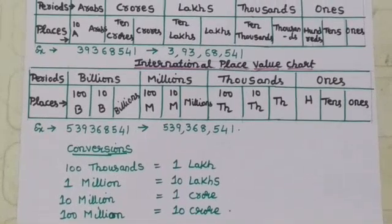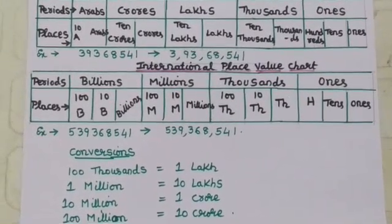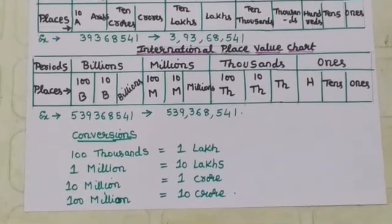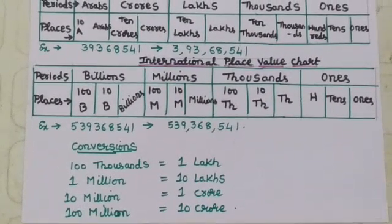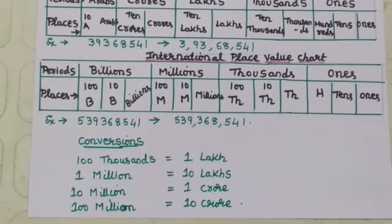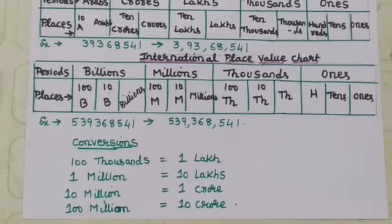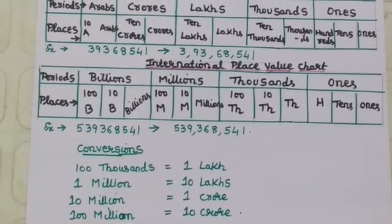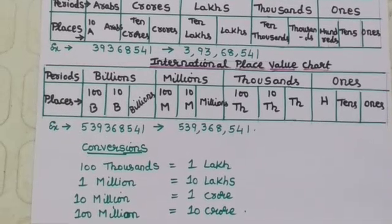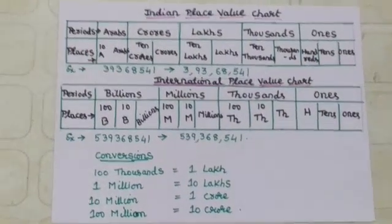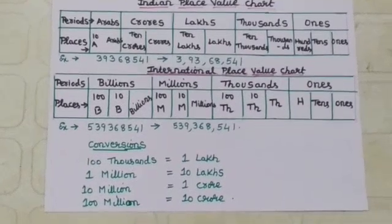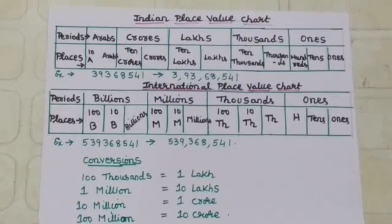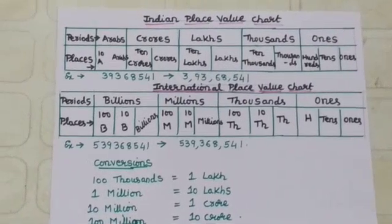We put commas to separate the periods. Here, they are grouped evenly by 3, 3, 3, 3. So the numeral 5, 3, 9, 3, 6, 8, 5, 4, 1 is read as 539, 368,000, and 541.